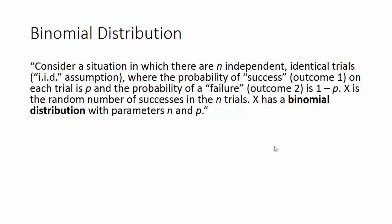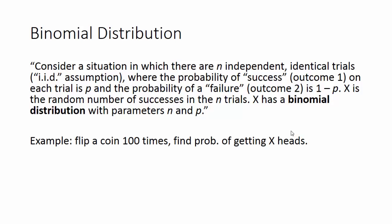X has a binomial distribution with parameters n and p. Think about a coin flip: if you flip a coin 100 times, what's the probability of getting x number of heads — 50 times, 10 times, 90 times, 100 times? We know the probability of getting 50 heads is larger than 100 heads, but what the binomial distribution gives us is exact probabilities based on running this simulation over and over.